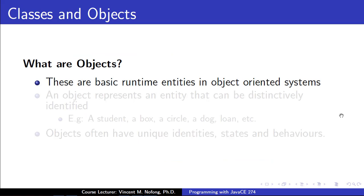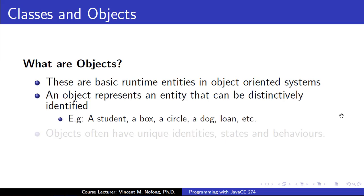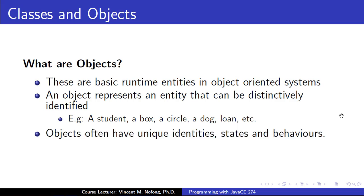When we talk about objects, we are referring to basic runtime entities in object-oriented systems. These objects often represent entities that can be distinctively identified. For example, if we are writing a program that stores student details, the student becomes the object. If our program is on a loan, the loan becomes the object. We should understand that objects often have their unique identities, states, and behaviors.